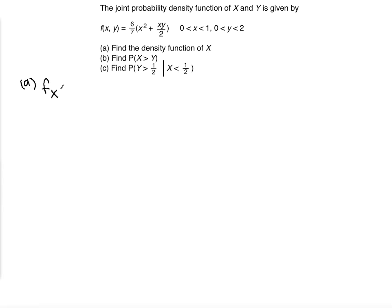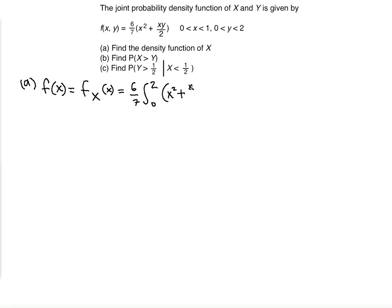The density function of x is written in a specific notation. Basically, what it means is that we're going to take the given function and integrate with respect to y. We already place the 6/7 outside, so we integrate x² + xy/2 with respect to y. We keep x as a constant — we do not work with the x variable directly; we only work with the y integral when finding the density function of x.